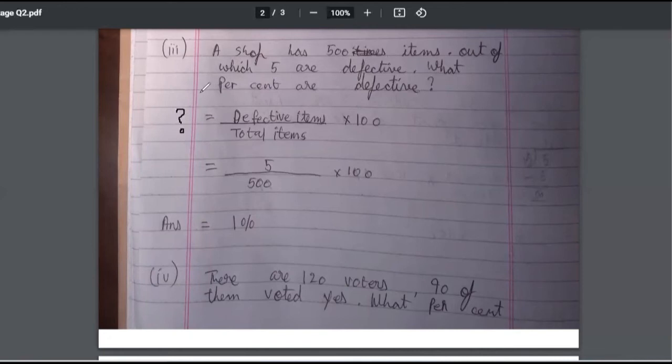So percentage of defective items. We can just simply write defective percent. Defective items upon total items. Zero, zero got cancelled. Cancel this part also, then only it will be 1 percent. Good.